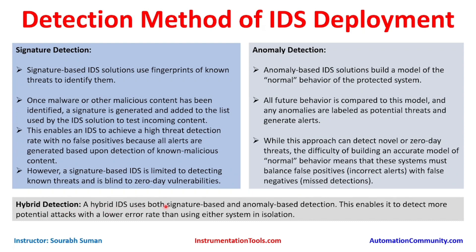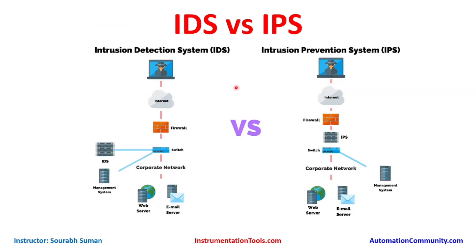The third type is hybrid IDS, which uses both signature-based and anomaly-based detection. This enables it to detect more potential attacks with a lower error rate than using either system in isolation. Hybrid detection is the recommended mode to implement in any environment. If your environment is really large, you should go for hybrid detection tools — they will operate in learning mode as well as detection mode, combining both capabilities.